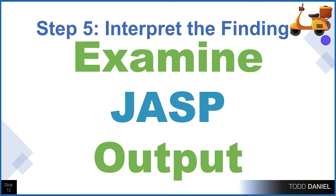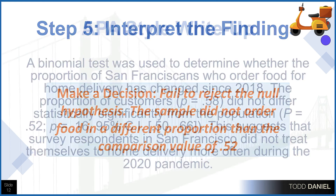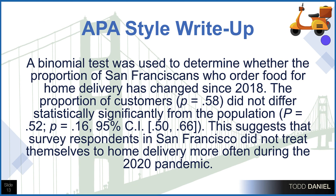Having examined the output, we make a decision that we fail to reject the null hypothesis. The sample did not order food in a statistically significantly different proportion than our comparison value of 0.52. Here is how we write up the findings in APA style: A binomial test was used to determine whether the proportion of San Franciscans who ordered food for home delivery has changed since 2018. The proportion of customers, p = 0.58, did not differ statistically significantly from the population, p = 0.52, with a probability of 0.16, 95% CI [0.50, 0.66]. This suggests that survey respondents in San Francisco did not treat themselves to home delivery more often during the 2020 pandemic. And that is how you do a binomial test in JASP.